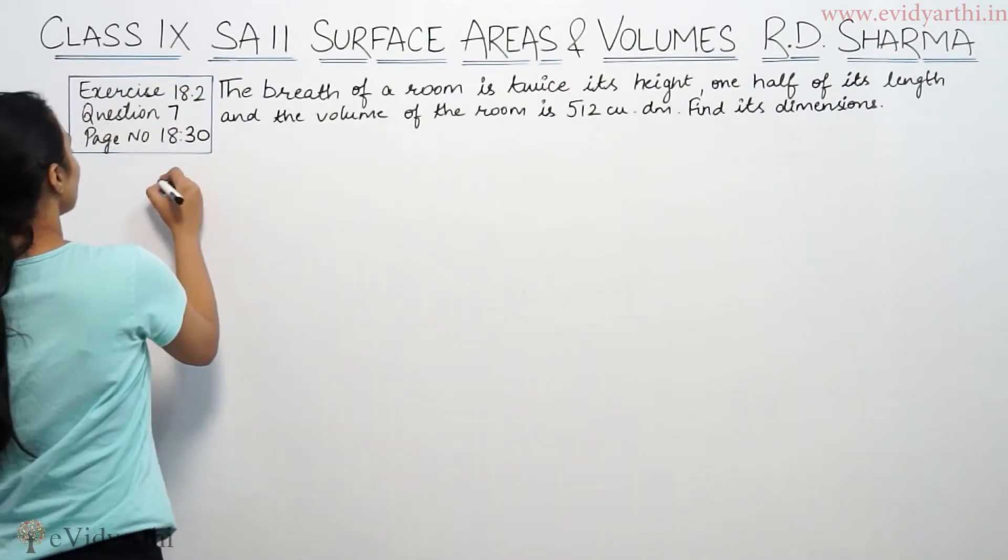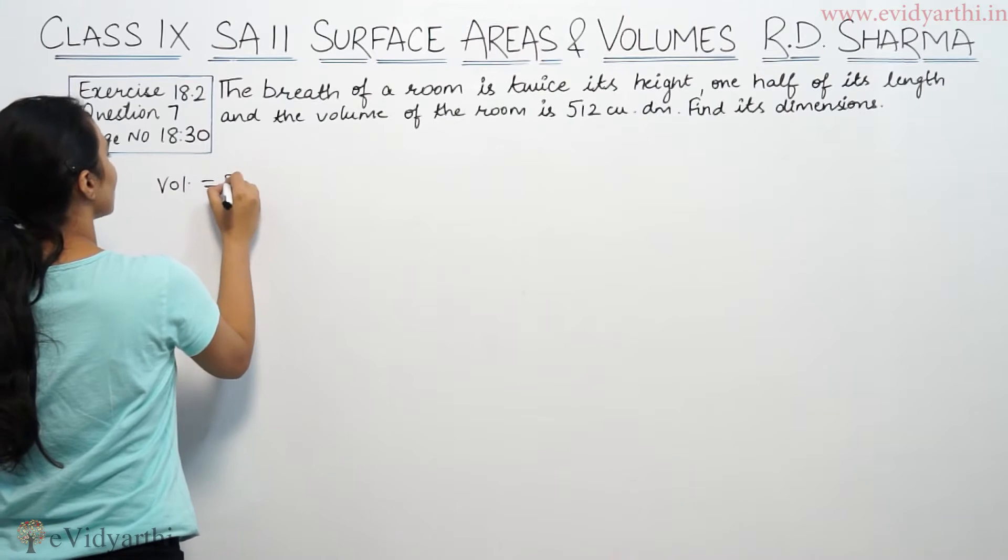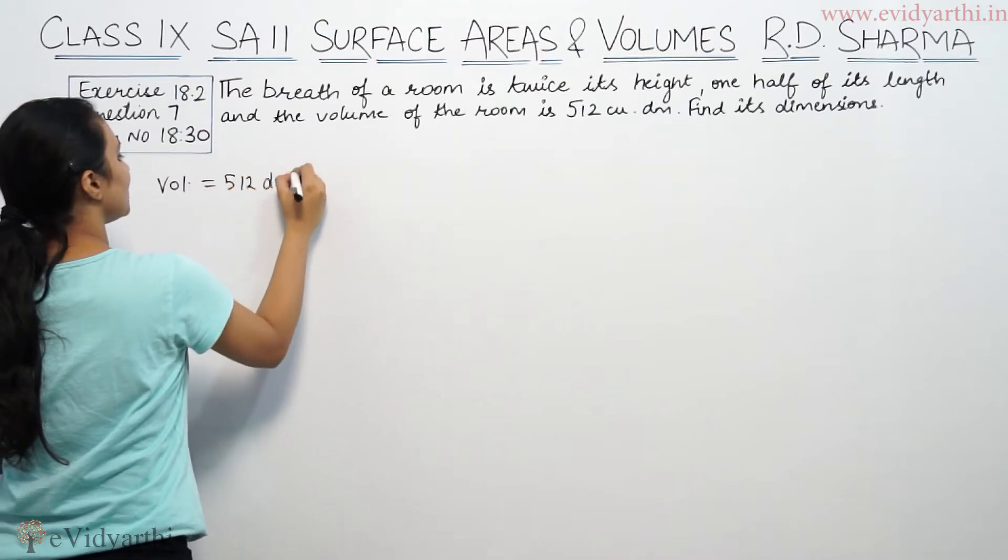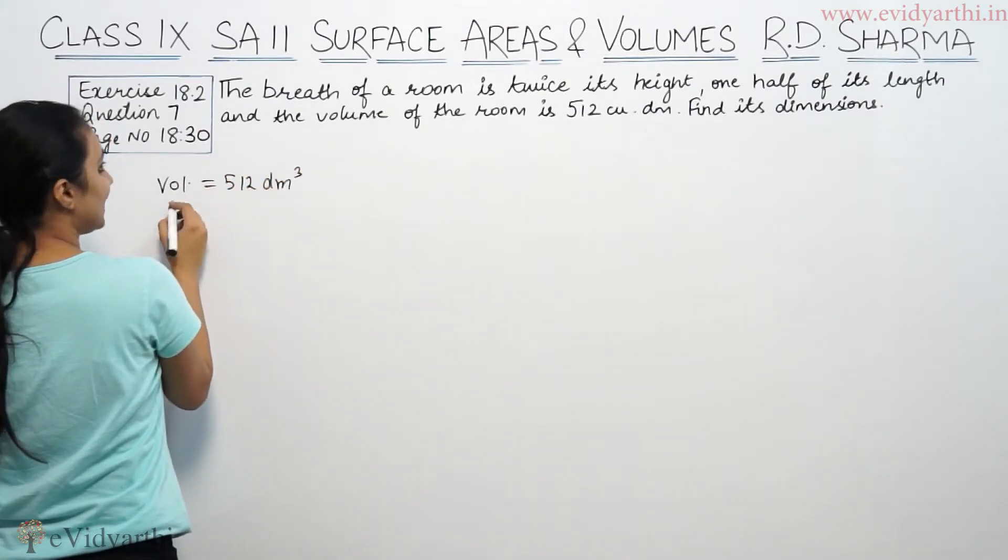So we need to find length, breadth, and height. Volume given is 512 decimeter cube.